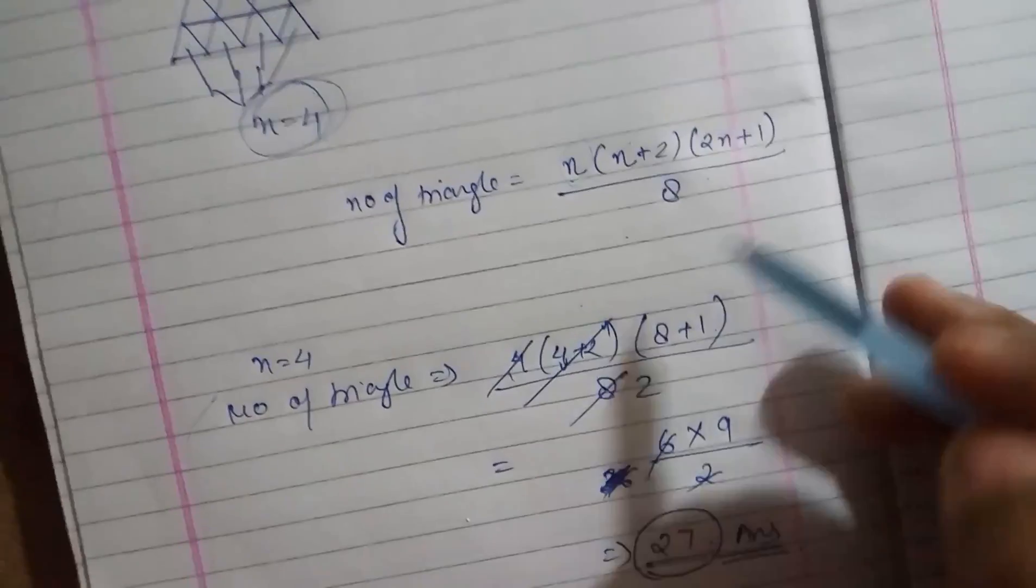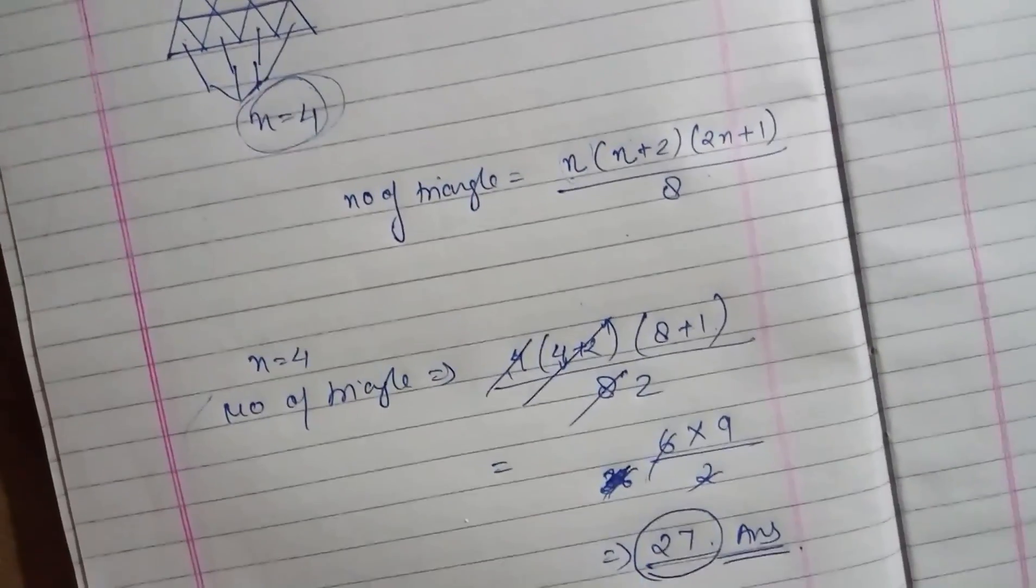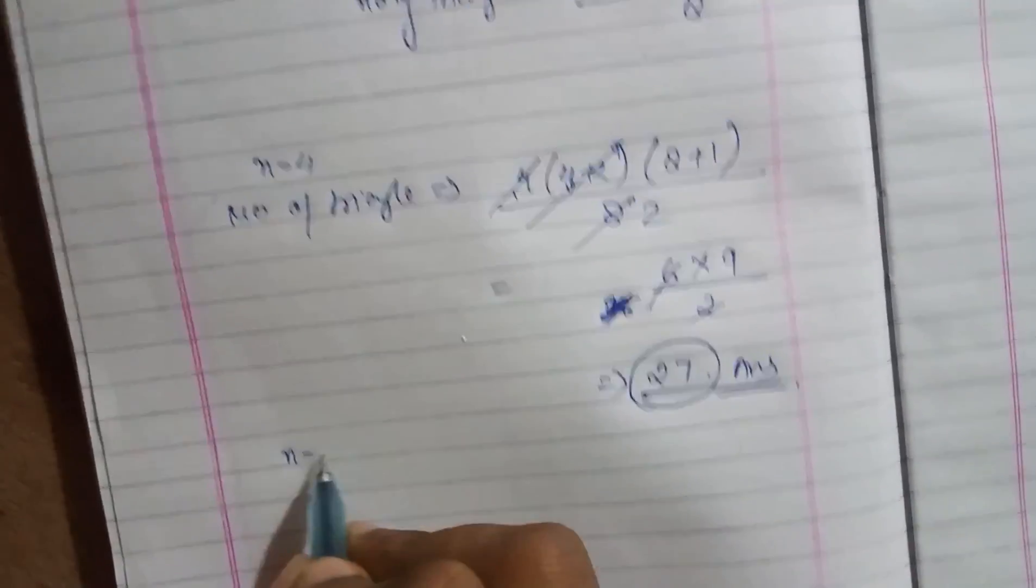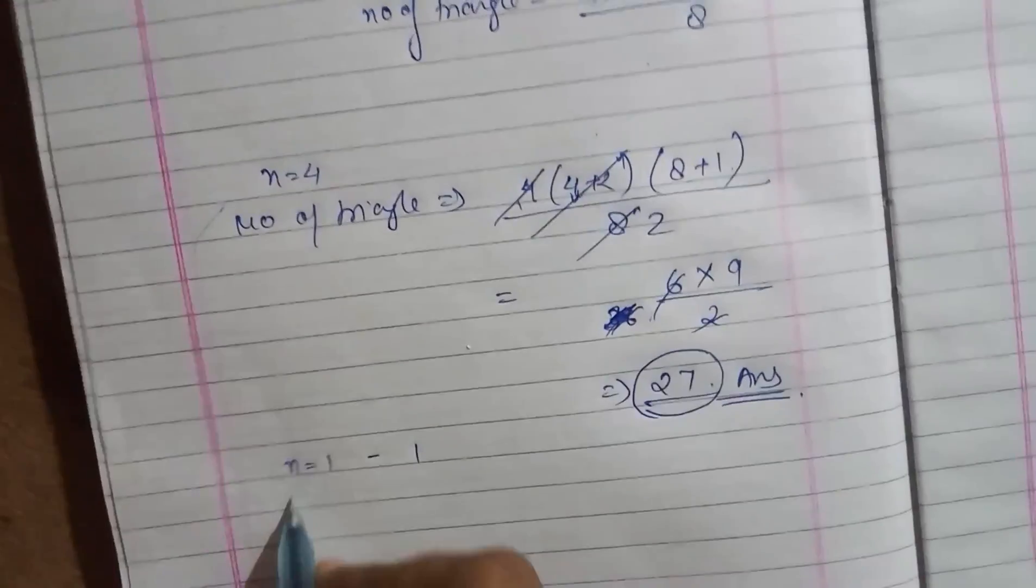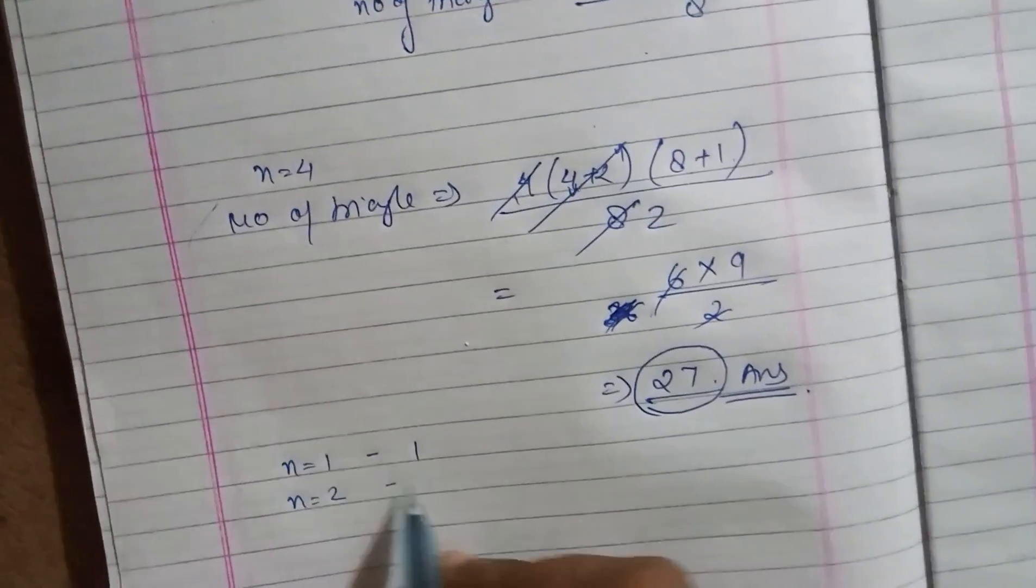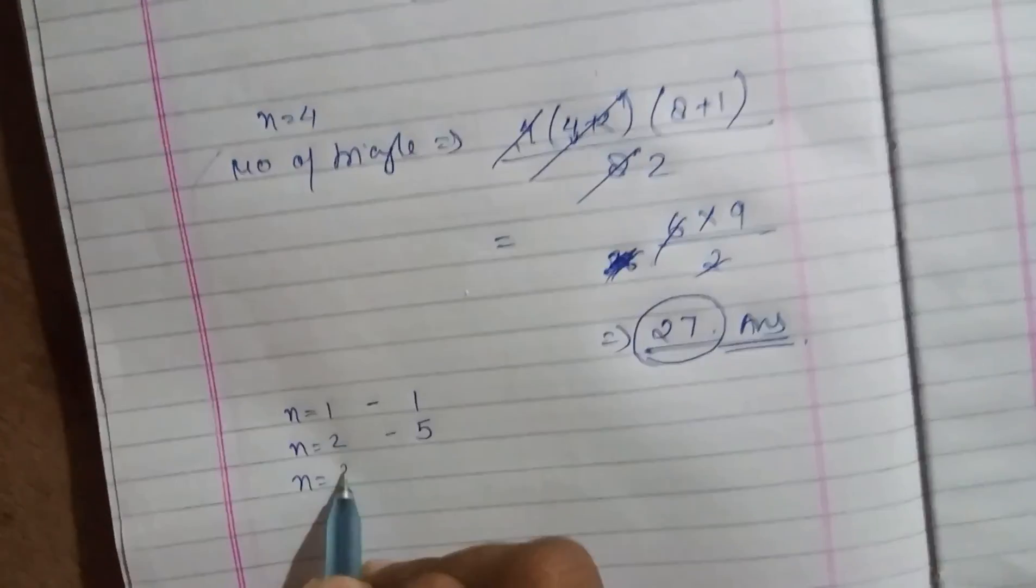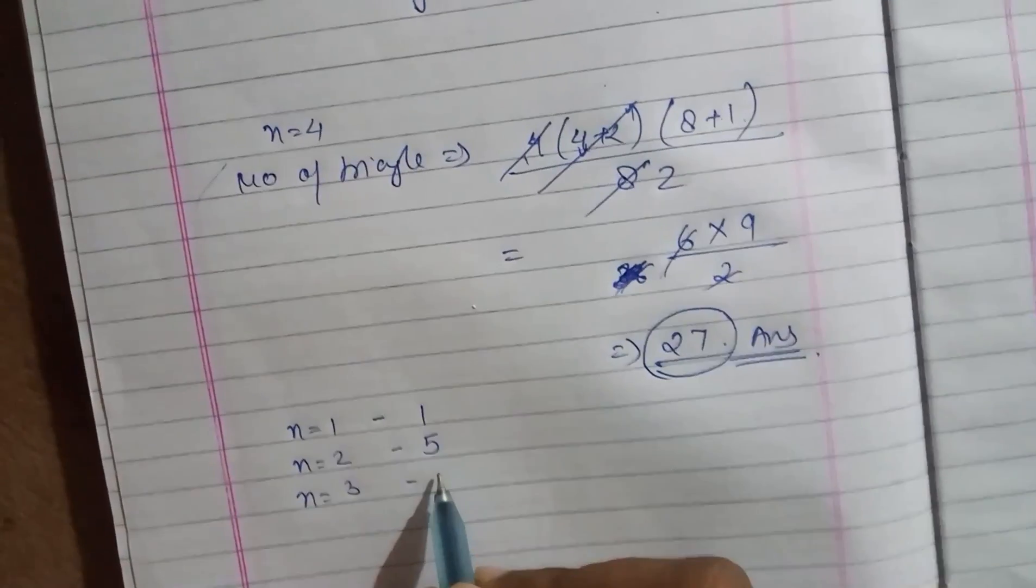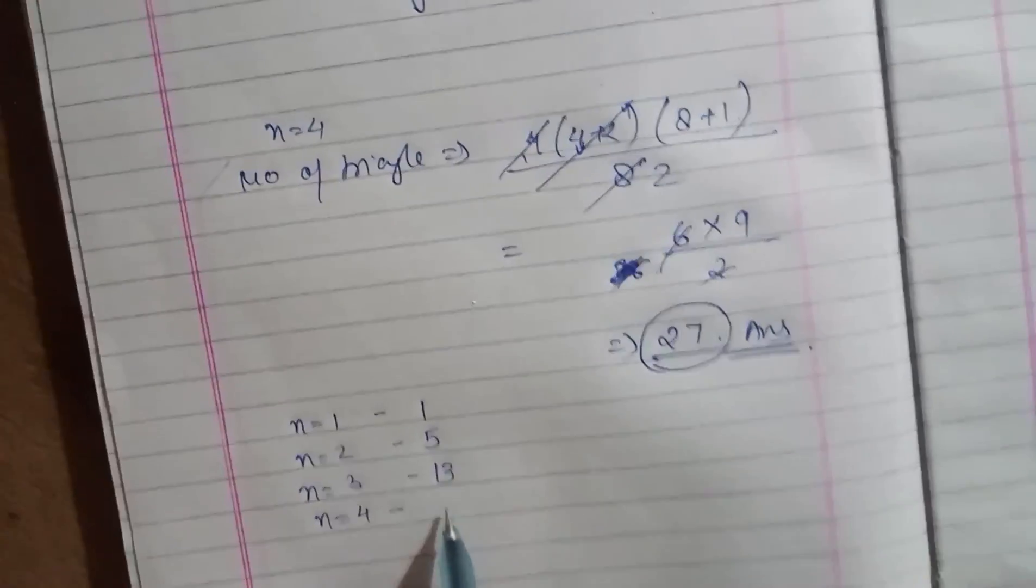You'll get it easy from here. And I have some results for you guys also. When n equals to one, number of triangles are one. When n equals to two, number of triangles are five. When n equals to three, number of triangles are 13. N equals to four, number of triangles are 27.